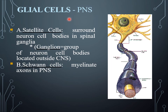Glial cells are those that surround and support the neuron. Glial cells of the peripheral nervous system consist of satellite cells and Schwann cells. Satellite cells surround the neuron cell body in the spinal ganglia. Schwann cells contain the myelinated axons in the peripheral nervous system.